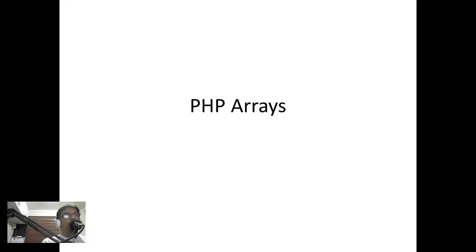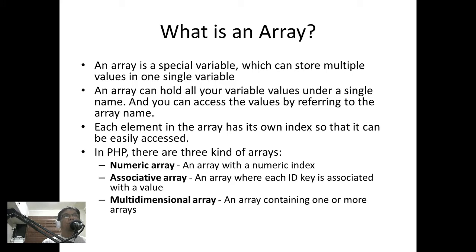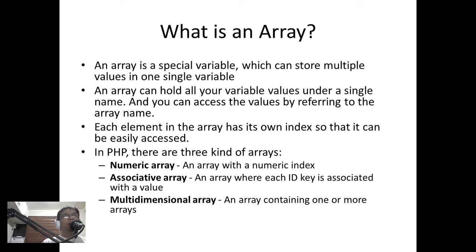PHP arrays. What is an array? An array is a special variable which can store multiple values in one single variable. An array can hold all your variable values under a single name, and you can access the values by referring to the array name. Each element in the array has its own index so that it can be easily accessed. In PHP, there are three kinds of arrays.